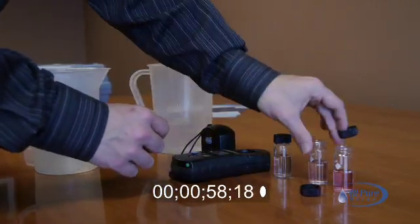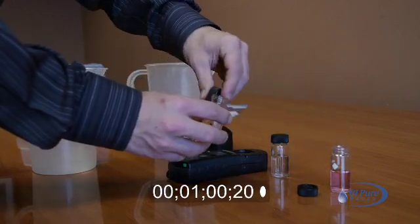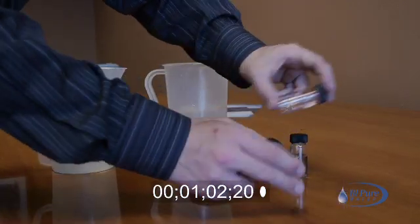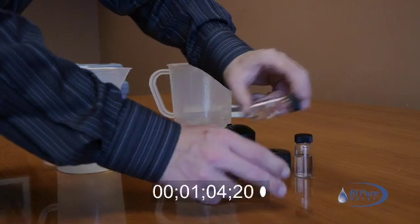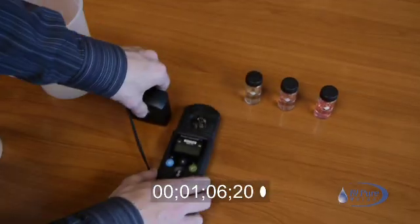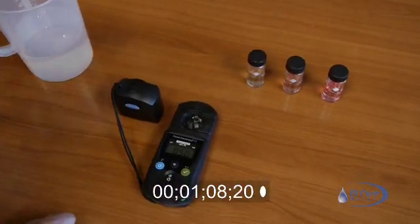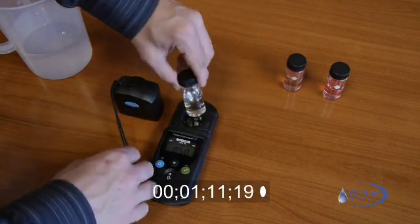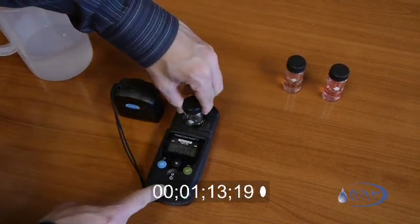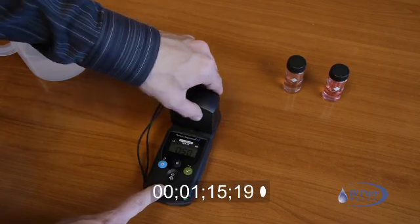Put the caps on the tubes and agitate. Turn on the colorimeter and place the reference sample, pointing the diamond towards the center of the instrument. Put the measurement cap on.